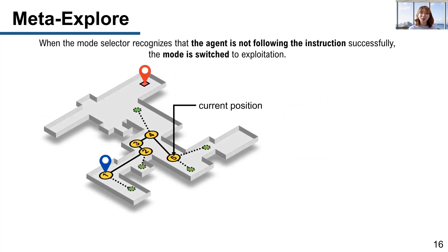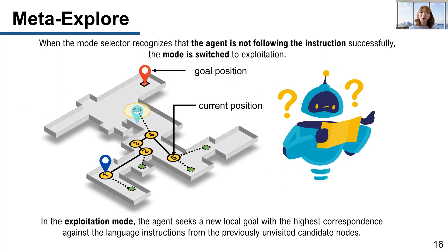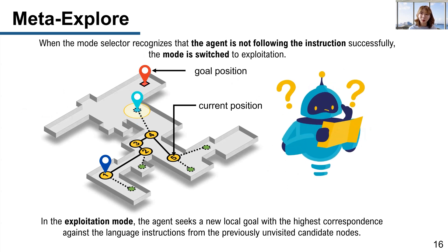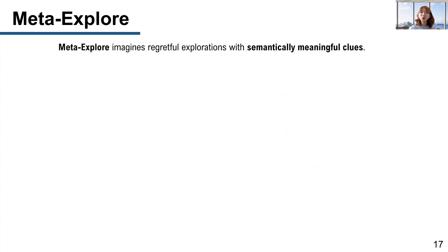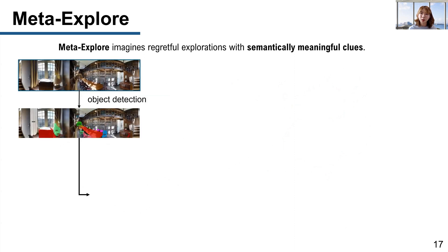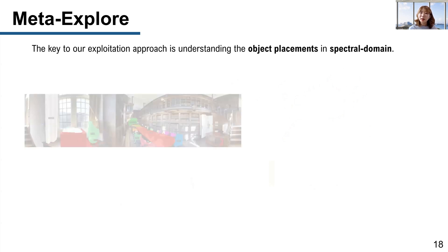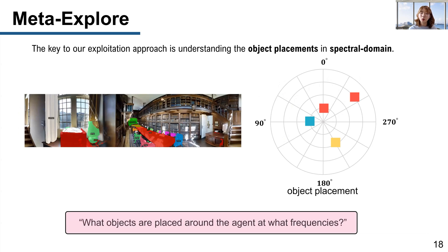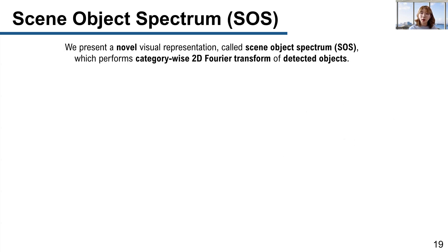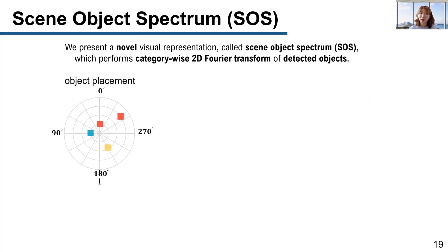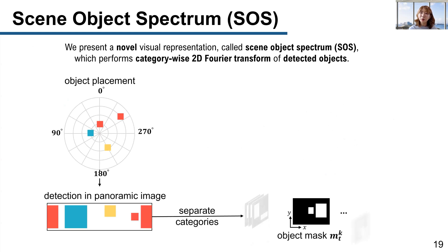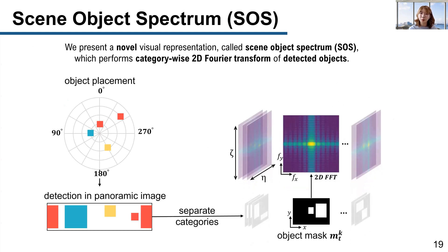Now, the most important part of our method is to choose which node acts as the local goal. Our criterion was to choose a node with the highest correspondence with the language instruction. Usually, objects tend to be important clues in language instructions, so we thought that we should utilize semantic information including objects by extracting spatial domain and spectral domain object features. The key idea of spectral domain object features is to know what objects are placed around each node at what frequencies. We propose a novel visual representation called Scene Object Spectrum (SOS), calculated by detecting objects in the panoramic image and performing category-wise 2D Fourier transform on the binary object masks.